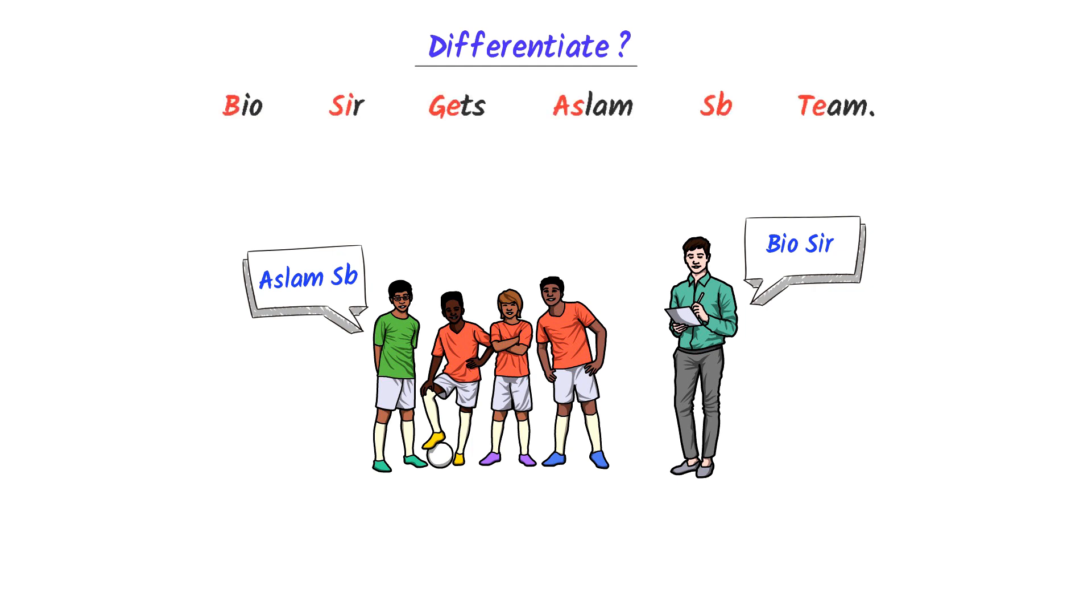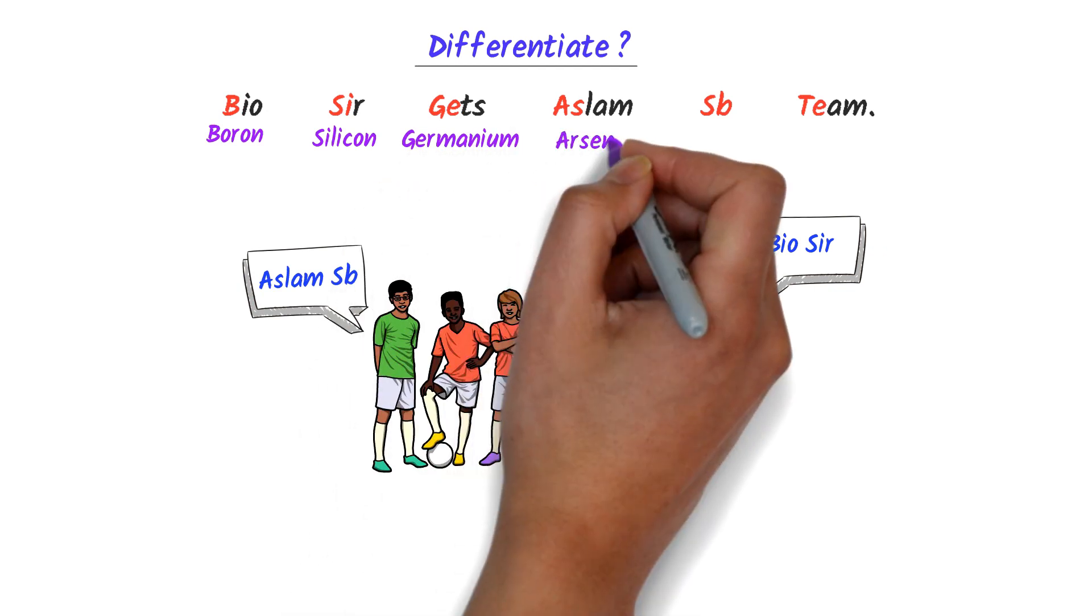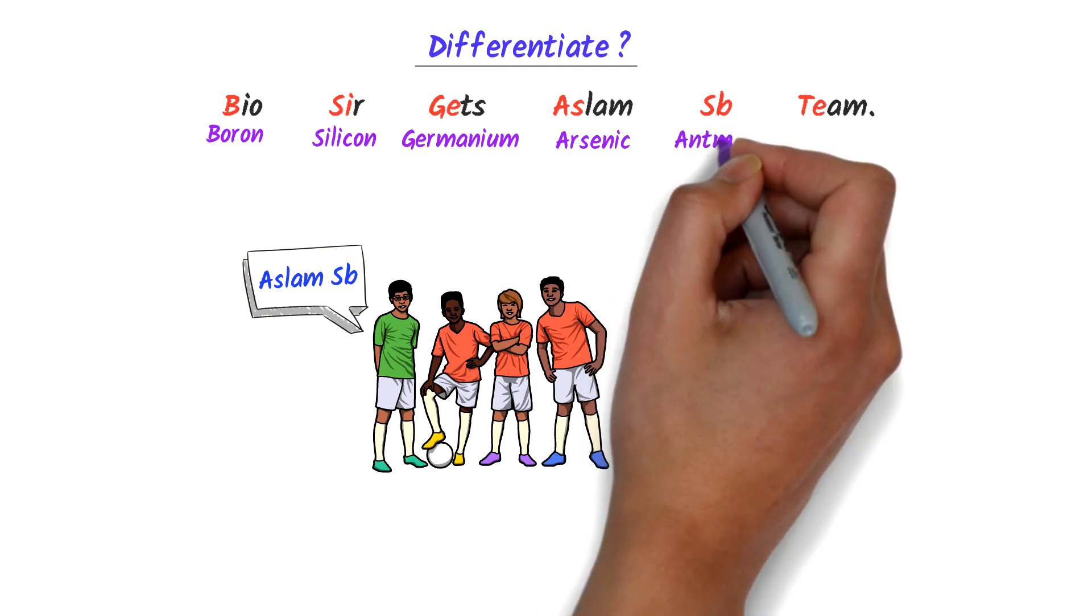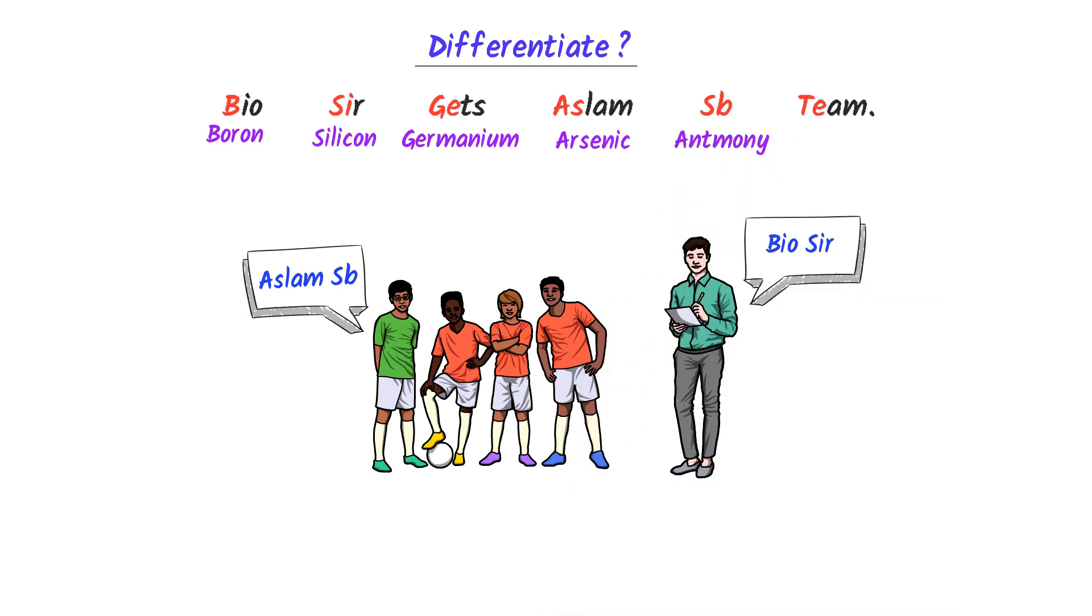So I say, Bayu Sir gets Aslam Saab team. Here, B stands for boron, Si stands for silicon, Ge stands for germanium, As stands for arsenic, SB stands for antimony and Te stands for tellurium. These are the 6 metalloids in the periodic table.